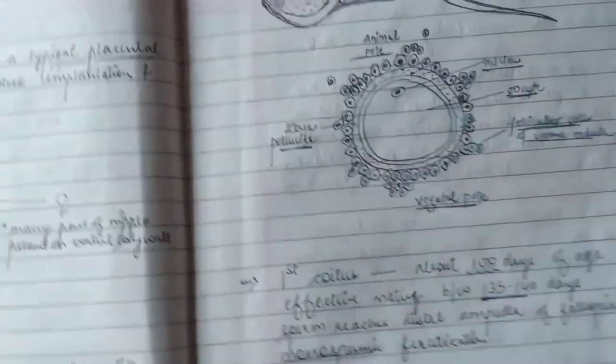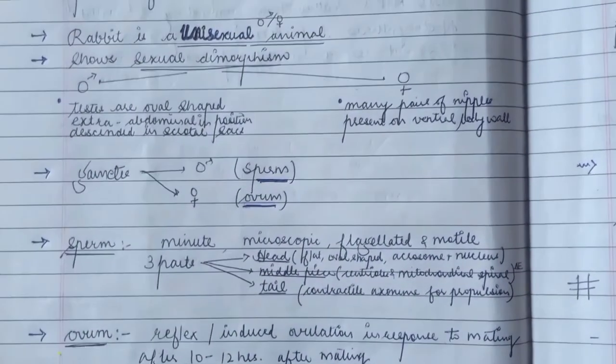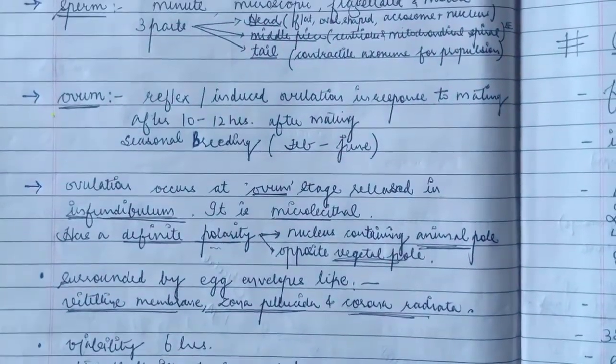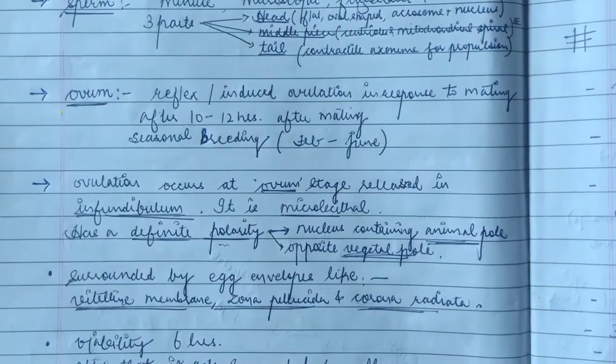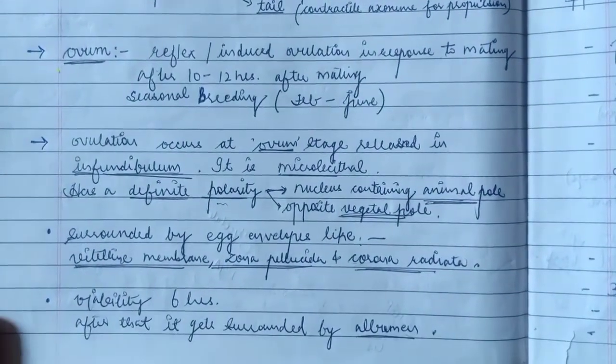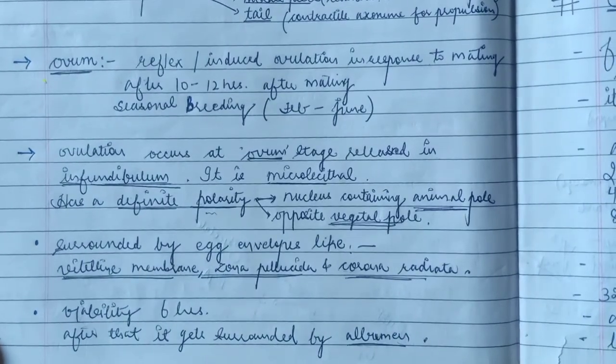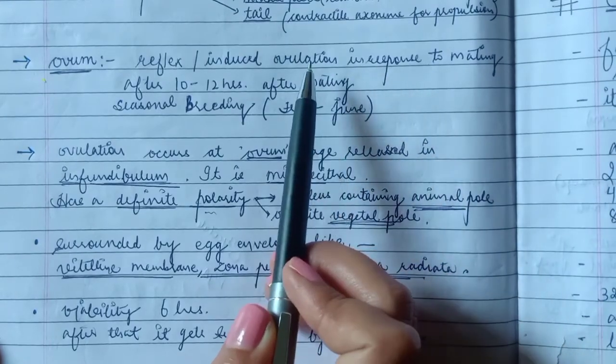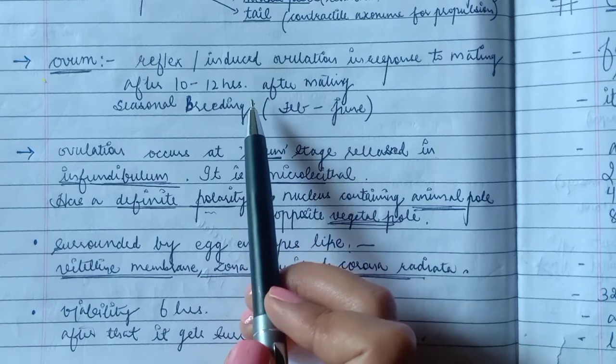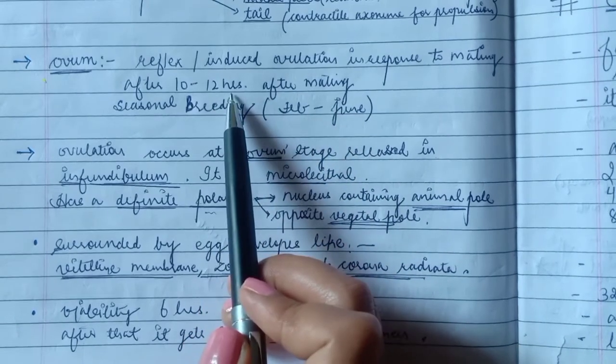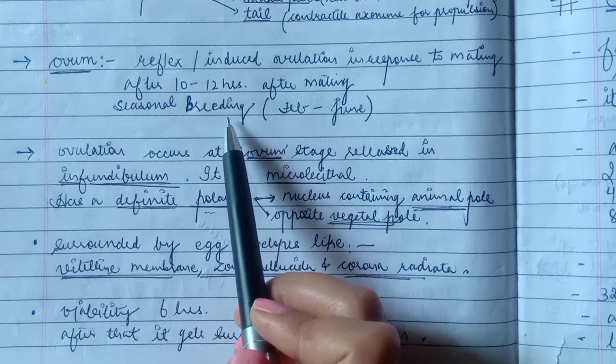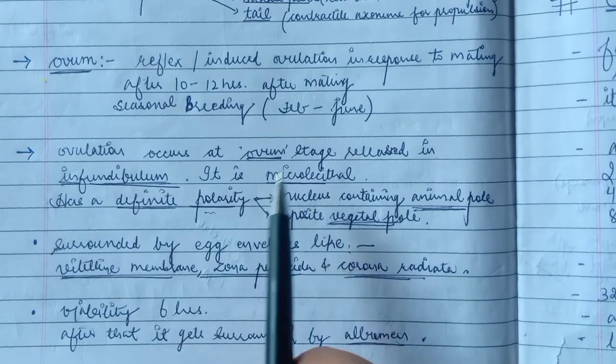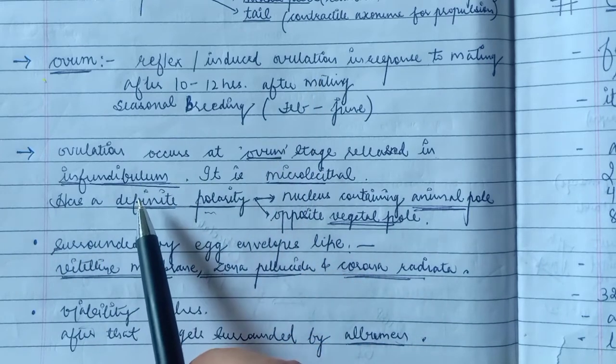After that, we will find how the female gamete is. Why is rabbit ovum special? There is a special thing that unlike humans, we are mammals, but unlike humans, rabbit has induced ovulation. Regular ovulation is not there. Induced ovulation - when they are mating, they have induced ovulation. After 10-12 hours of copulation they ovulate. They are seasonal breeders - February to June month they are breeding. Then ovulation happens at ovum stage. They are released in infundibulum.